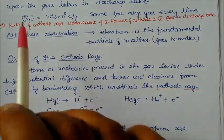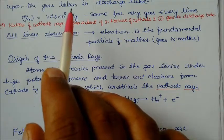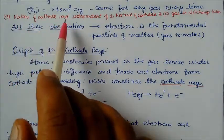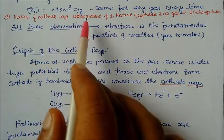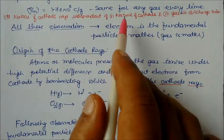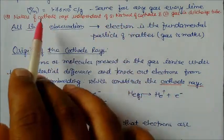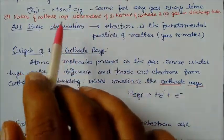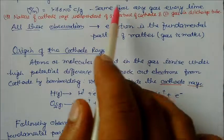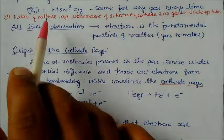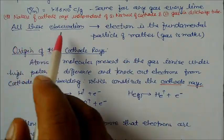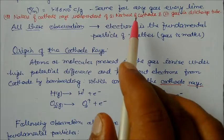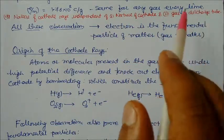Since the specific charge is always the same, it is concluded that charged particles are present in any kind of matter — all are the same. The nature of the cathode rays — negatively charged particles — is independent of the nature of the cathode. Whether you take gold, silver, or iron as cathode, or any gas in the discharge tube, the specific charge is always the same. This makes it clear that the electron is the fundamental particle of matter.